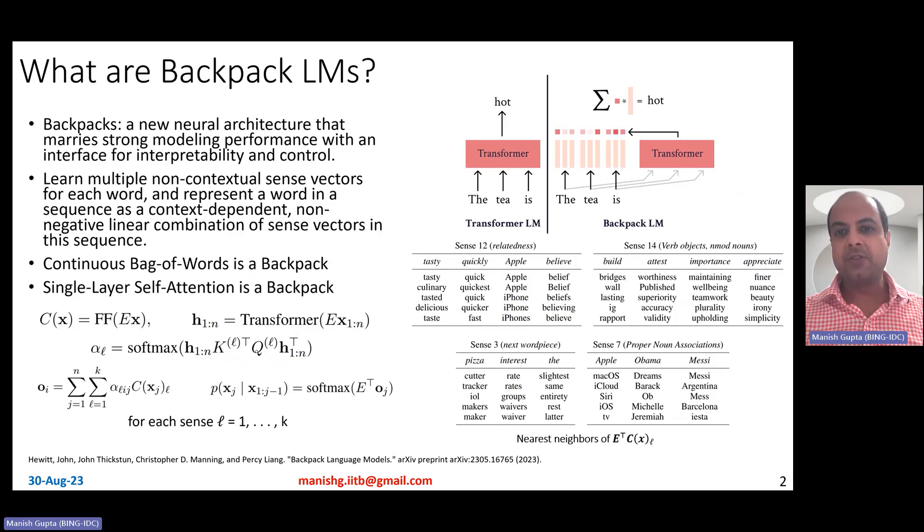What are Backpack LMs? What you see here is a typical transformer language model. It basically takes these words, the T is, and predicts the next word hot. It does so using the self-attention mechanism, the query key value kind of things, and then self-attention, QK transpose, softmax over that multiplied by the value vector. Backpack LMs are what are depicted here. Let's try to understand what this all means. In fact, Backpack LMs are a new neural architecture with not too much of a variation that marry the strong modeling performance with an interface for interpretability and control.